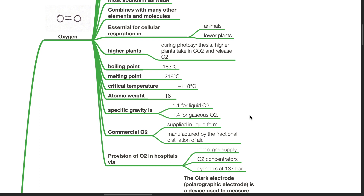Commercial oxygen is supplied in liquid form, manufactured by the fractional distillation of air. Provision of oxygen in hospitals is via pipe gas supply, oxygen concentrators, or in cylinders at 137 bar.